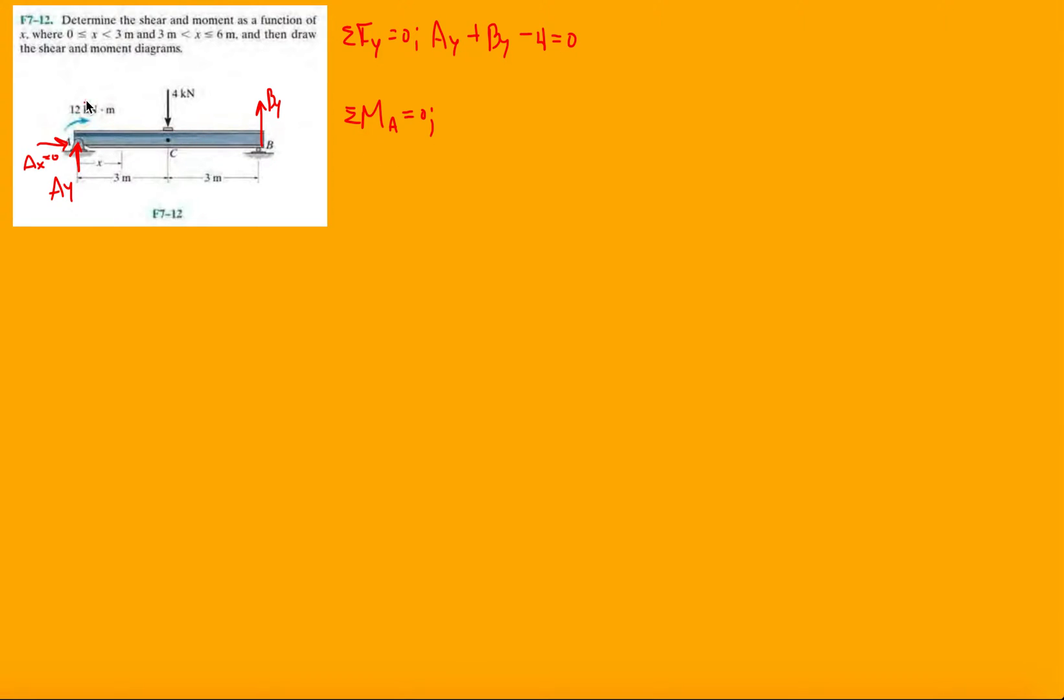At A we already have a moment of negative 12, then we're gonna take into account the moment that the four contributes, which is another negative moment, so four times three, and then plus six BY. So it's minus 12 minus 12, minus 24 divided by six, we have four kilonewtons.